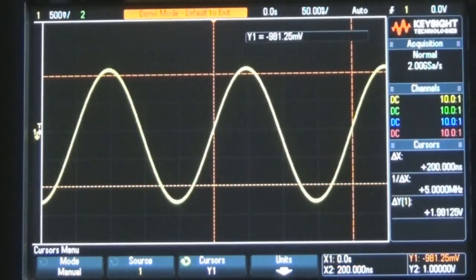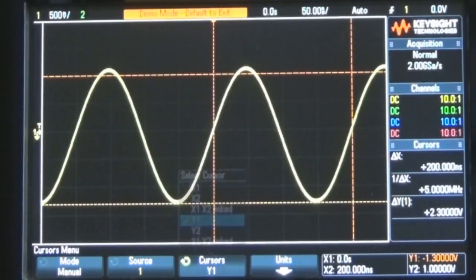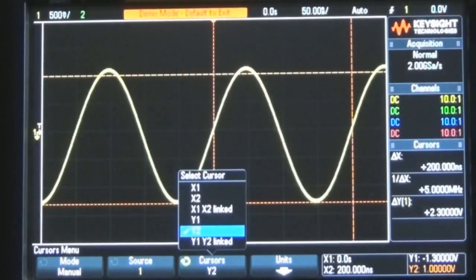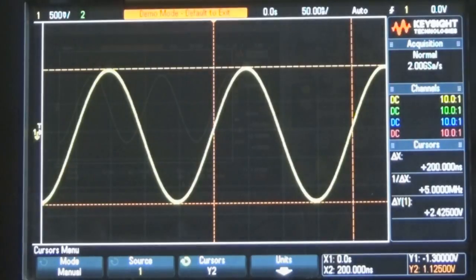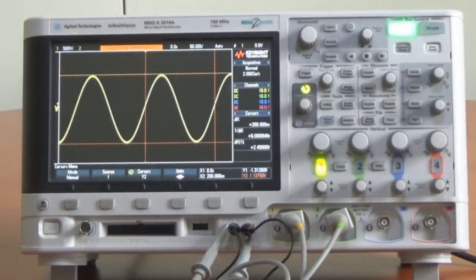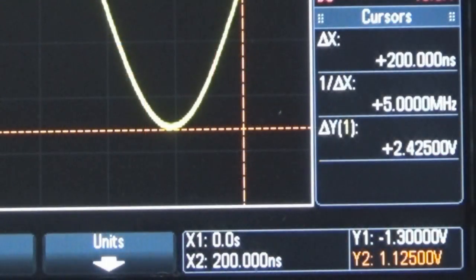Giraremos la perilla hasta que Y1, que es el marcador de voltaje número 1, se cruce con los picos negativos de las ondas sinusoidales. Para Y2 giraremos la perilla Cursors hasta que se cruce con los picos positivos de las ondas sinusoidales. Y listo, hemos configurado nuestro osciloscopio para que realice mediciones paramétricas automáticamente. Cuáles son el periodo, la frecuencia y el voltaje pico a pico de esta señal? La respuesta a estas interrogantes las encontrará en la esquina inferior derecha de la pantalla.